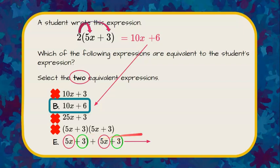So 5x plus 5x is 10x. And 3 plus 3 is 6. And that is equivalent to our expression that we got when we distributed. So choice E is also equivalent.